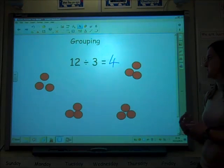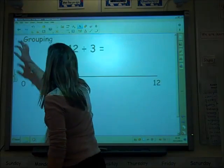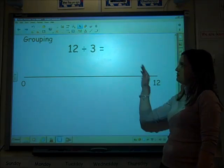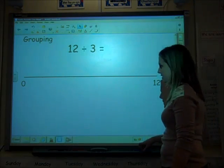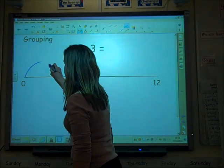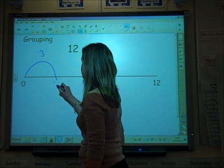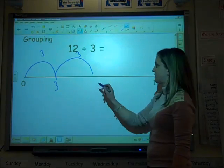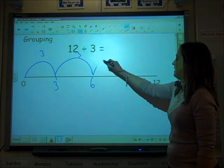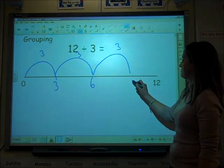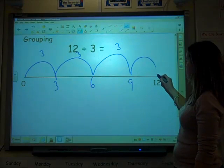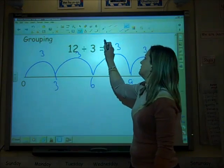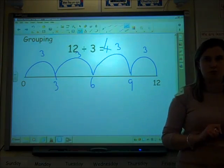So this is how we'd group on a number line. We've got 12, I've got to divide it by three. I've got there a three—there's my group of three. I've got another group of three that takes me to six. I've got another group of three that takes me to nine. I've got another group of three that takes me to 12. How many groups have I got? I've got four groups.